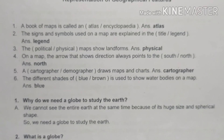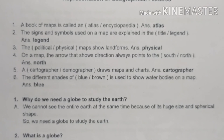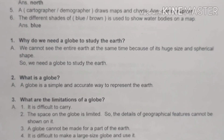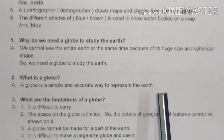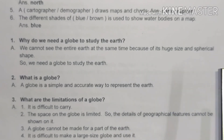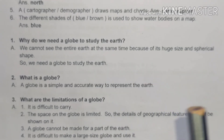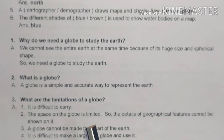Second question: what is a globe? A globe is a simple and accurate way to represent the earth. We have devised this tool — the globe — as a simple and accurate representation of the earth.